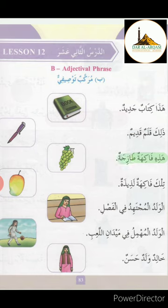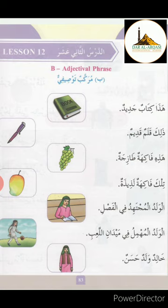هَاذِهِ فَاكِهَةٌ طَازَجَةٌ. هَاذِهِ means 'this' and is used for female words. فَاكِهَةٌ means 'fruit', طَازَجَةٌ means 'fresh'. The last letter of فَاكِهَةٌ is ta marbuta, so this is a female word in Arabic grammar. فَاكِهَةٌ is mausuf and طَازَجَةٌ is shifat, meaning 'fresh fruit'. هَاذِهِ فَاكِهَةٌ طَازَجَةٌ — This is a fresh fruit.